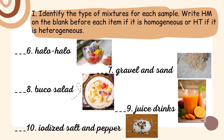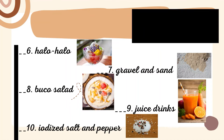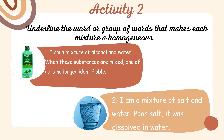Review your work. Are you done with this first part? If you are done, next is activity two. Let's go! Activity two is about finding the word or group of words that makes each mixture homogeneous. All you have to do is underline that word or group of words.